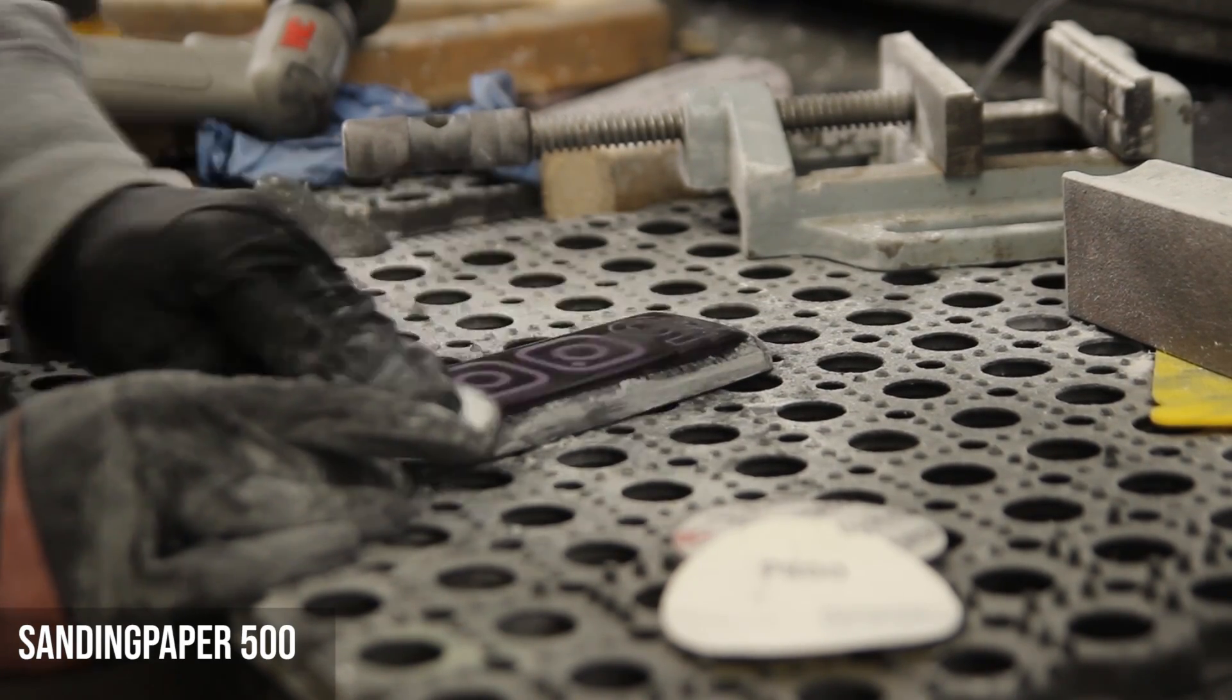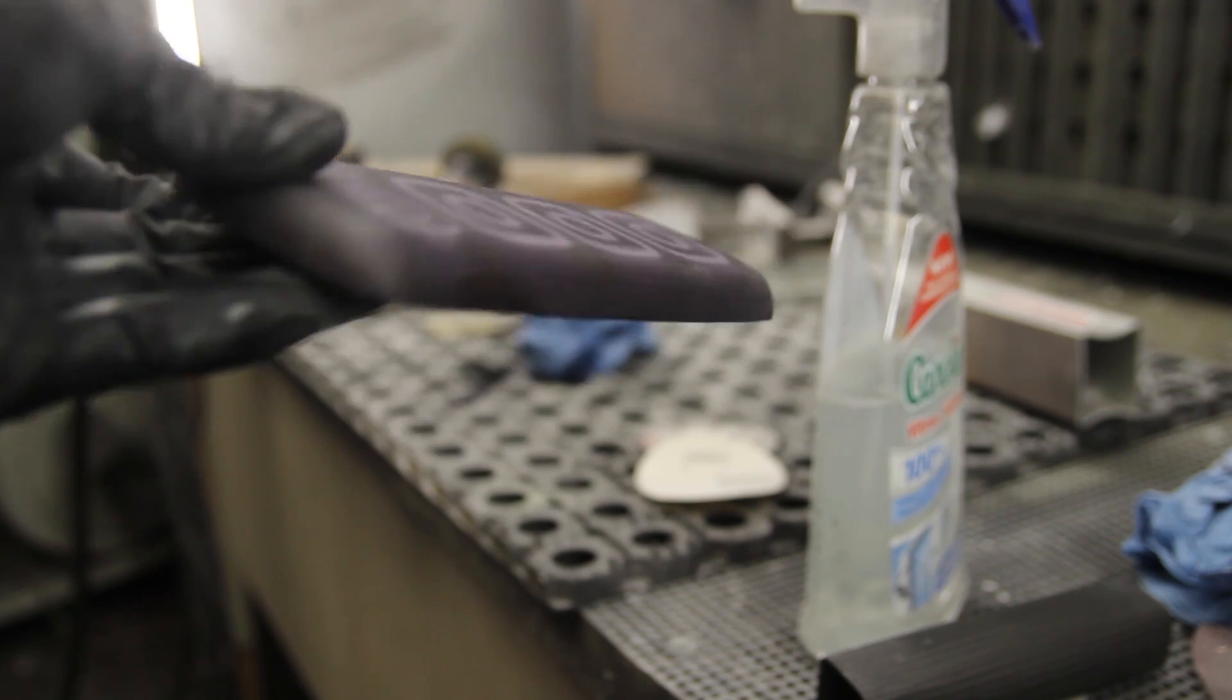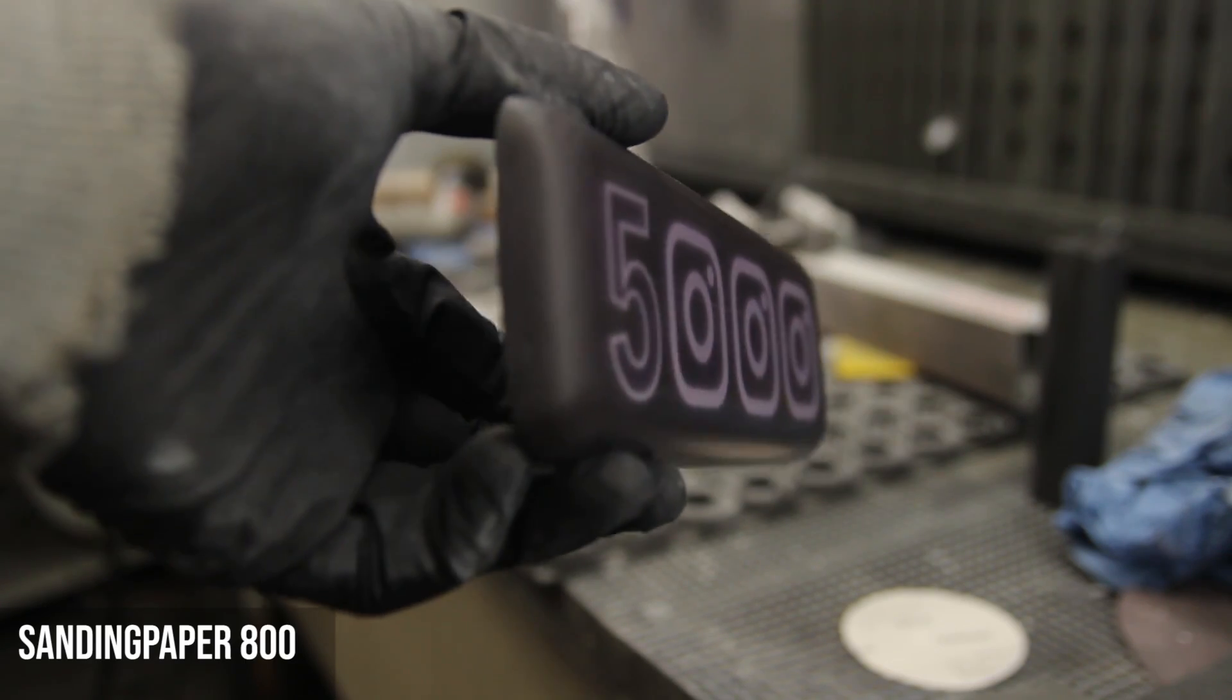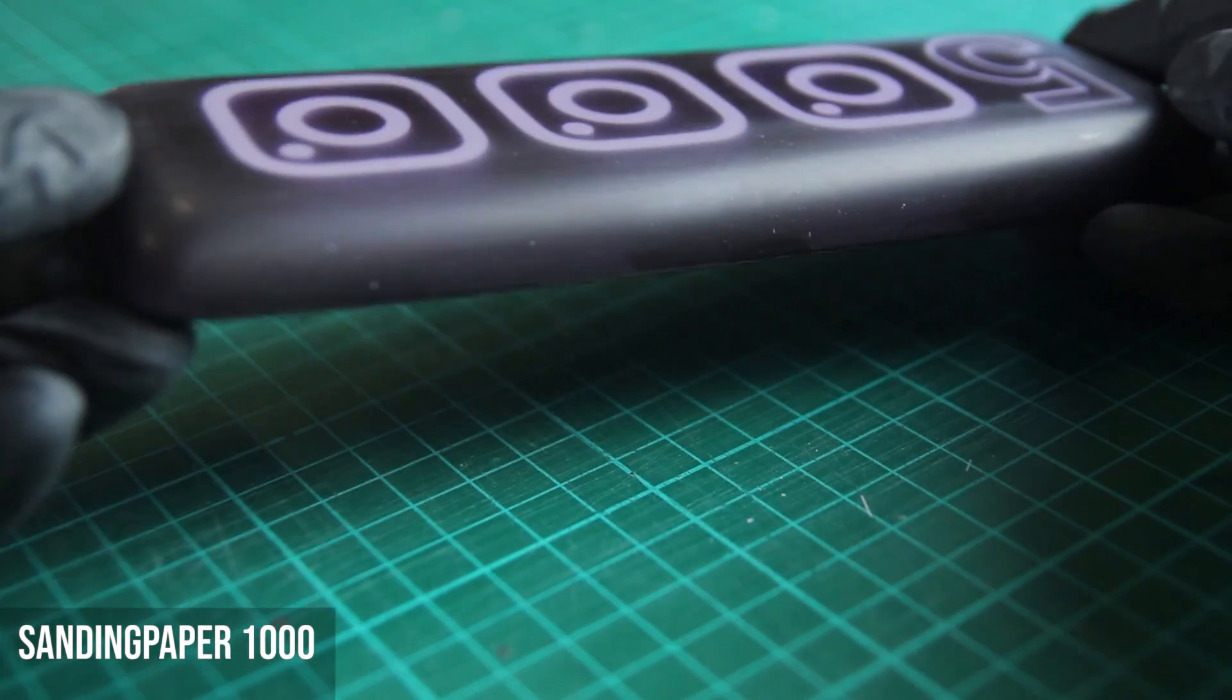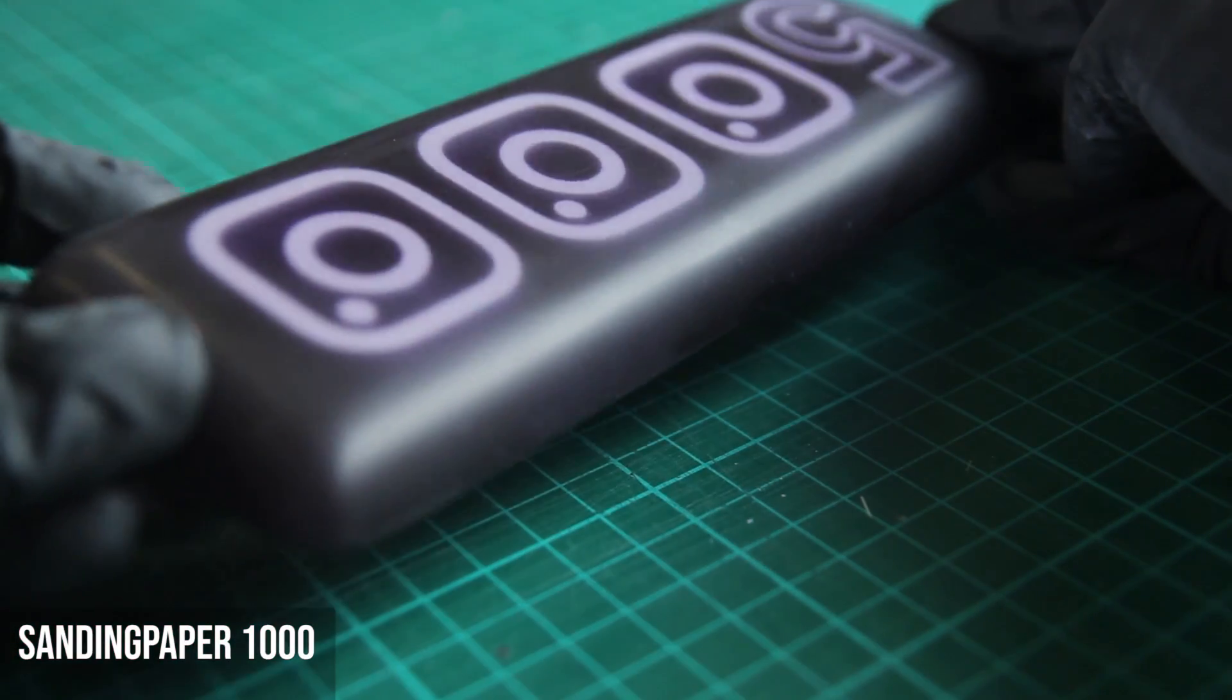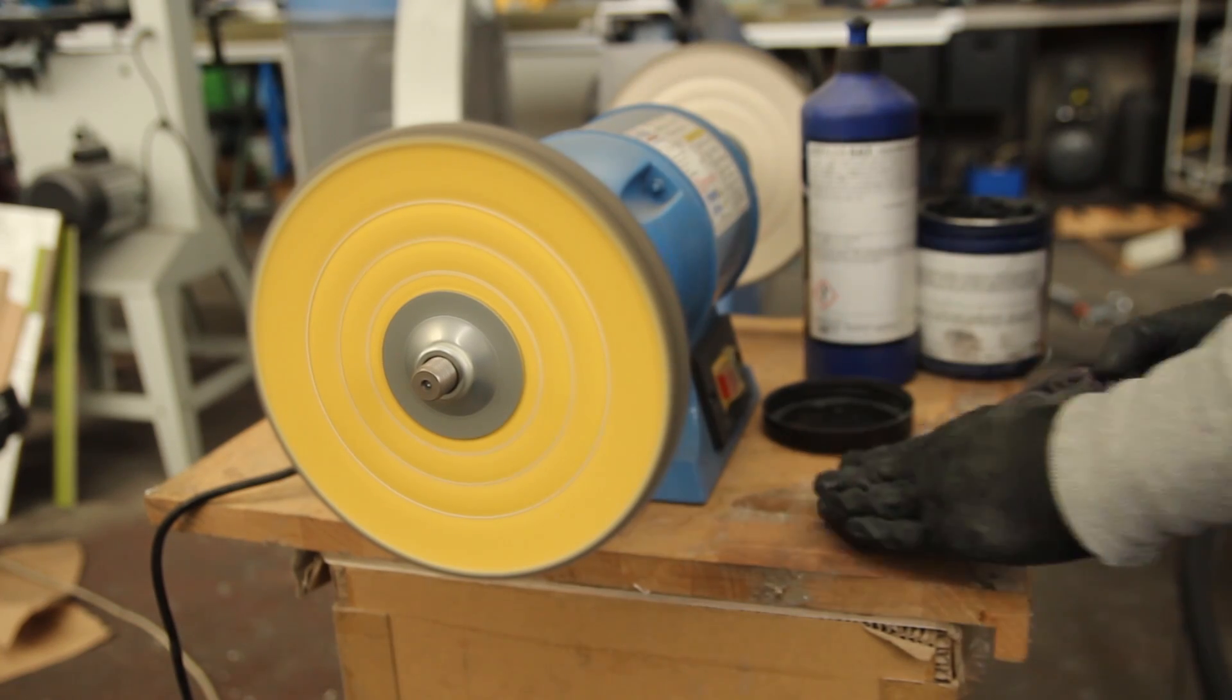Only at 500 I start with wet sanding as well, just because it gives me a better finish. So this is after 800 and then you'll see just before the polishing state this is 1000. So I mainly go to 1000 with these resins because it's good enough. The more time you put into it the better the results will be.